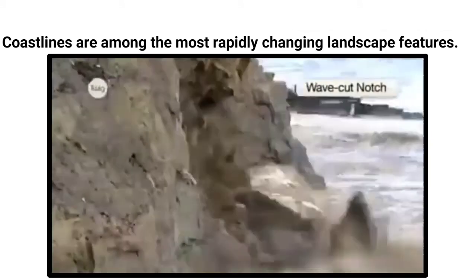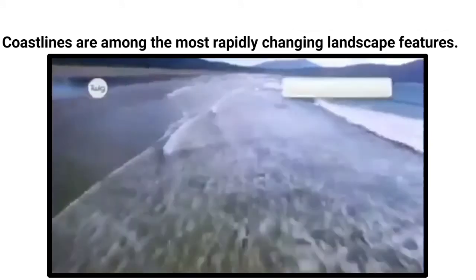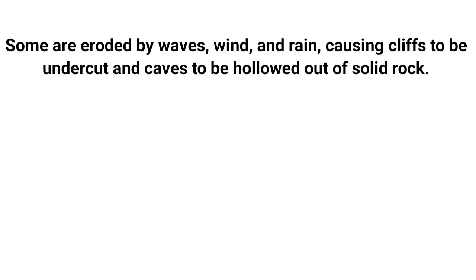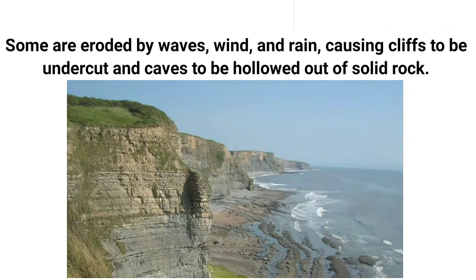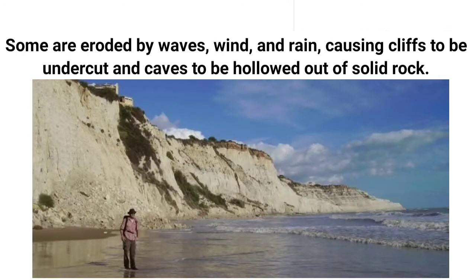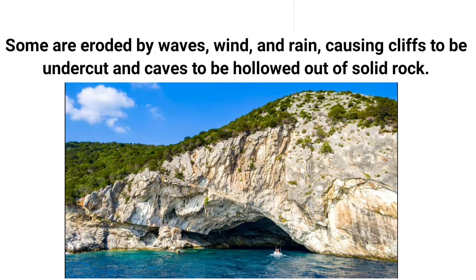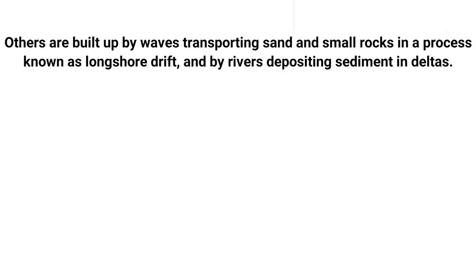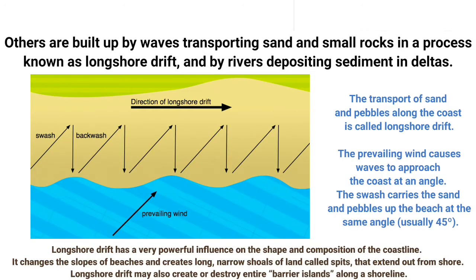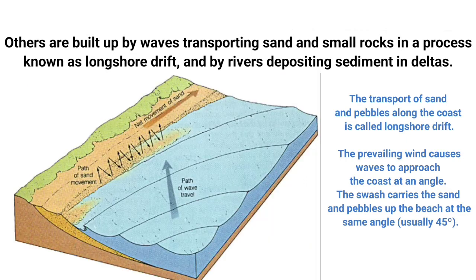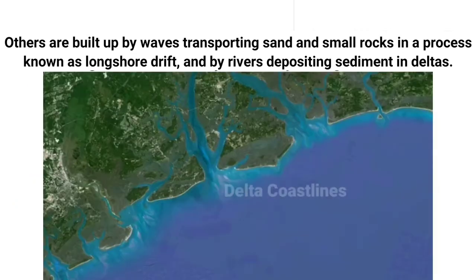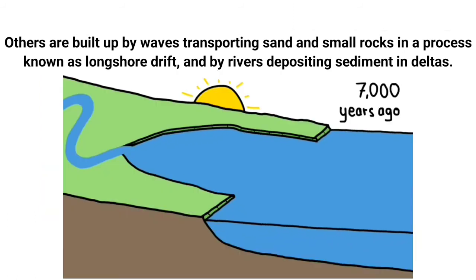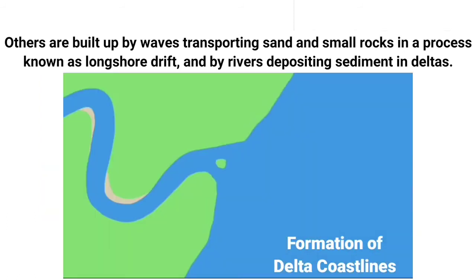Coastlines are among the most rapidly changing landscape features. Some are eroded by waves, wind and rain, causing cliffs to be undercut and caves to be hollowed out of soft rock. Others are built up by waves transporting sand and small rock in a process known as longshore drift, and by rivers depositing sediment in deltas.